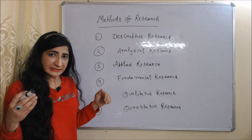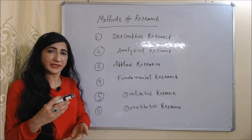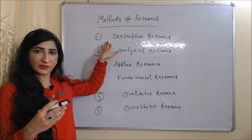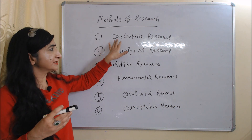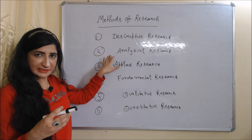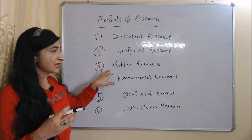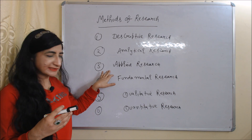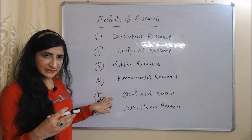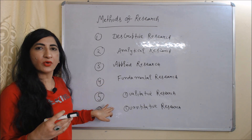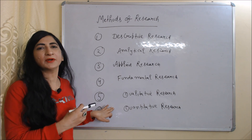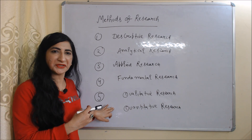Now we will see some important types of research. The important types are descriptive research, analytical research, applied research, fundamental research, qualitative research and quantitative research. We will discuss each one by one.